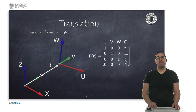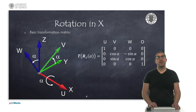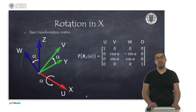We will start by describing the basic transformation matrix of a translation operation. As it can be seen, it is a homogeneous matrix with the last column containing the coordinates of the translation vector t. In the case of a rotation around x, the homogeneous transformation matrix is composed of a 3x3 submatrix corresponding to the rotation matrix around x, and the translation component is simply a vector with zeroes.